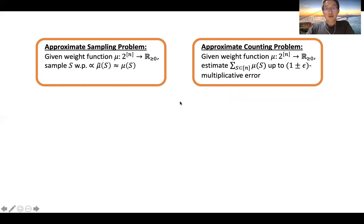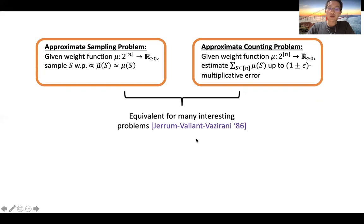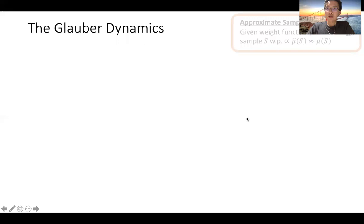Typically, the counting problem is sharply hard to do exactly, so we consider the approximate versions of these problems, where for sampling you're allowed to sample from a distribution close to the target distribution, and for counting you're allowed epsilon multiplicative error. A beautiful work of Jerrum, Valiant, and Vazirani showed that these two approximate versions are actually equivalent to each other. So throughout, we will mainly consider the approximate sampling problem.